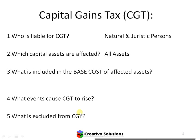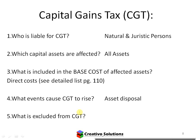The base cost of an asset includes your cost of purchase and all costs directly associated with acquiring the asset. Events that cause CGT include disposal — when you sell or transfer an asset. Legislation determines the exclusions.